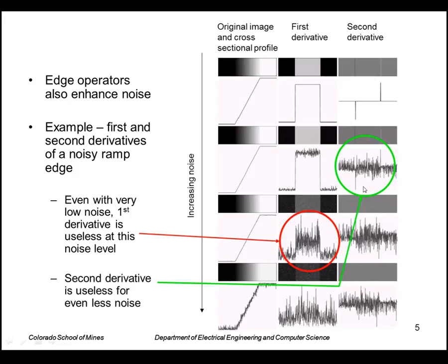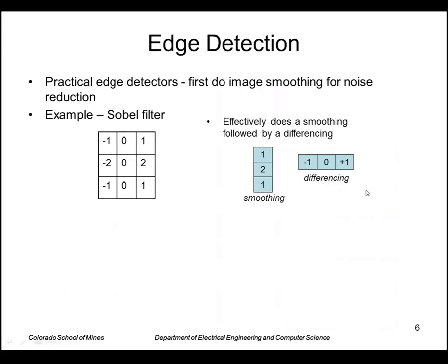And it's at even a low level, lower level of noise, the second derivative is even worse. So to get around that, the edge operators have to do smoothing prior to differentiation.